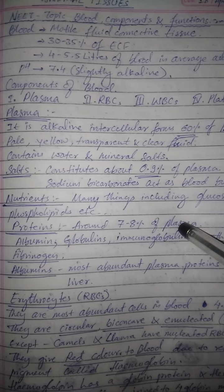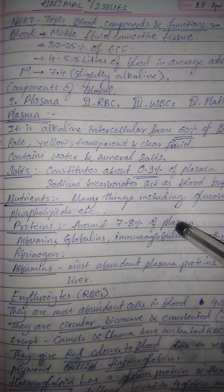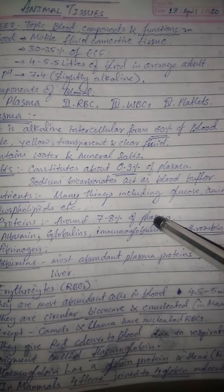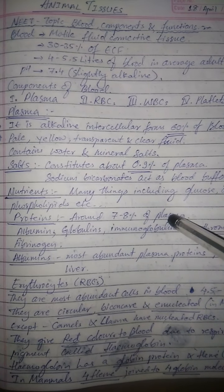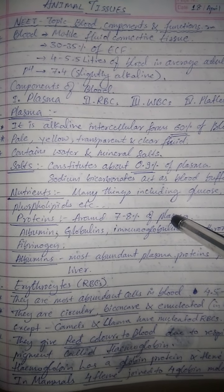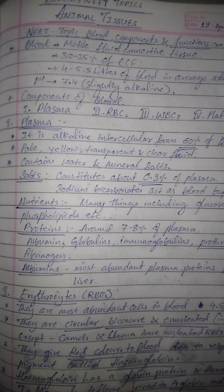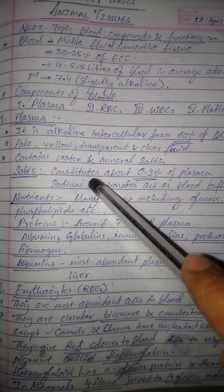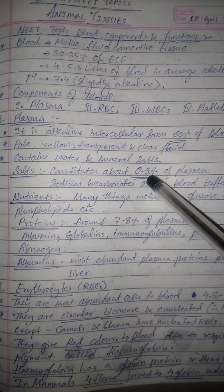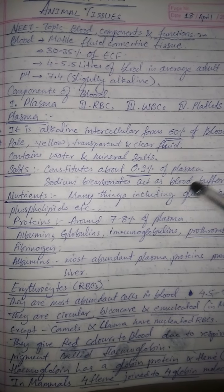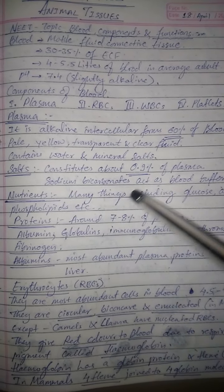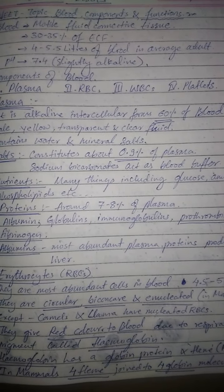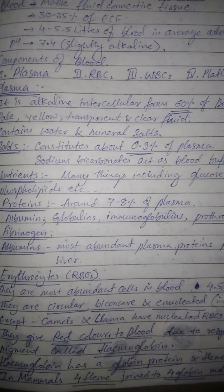Plasma is an alkaline fluid which is intercellular, present between the blood cells, and forms around 60 percent of the blood. It is a pale yellow, transparent, clear straw-colored fluid. It contains water and minerals mainly. The mineral salts constitute about 0.9 percent of the plasma, and mainly sodium bicarbonates are present, which act as blood buffers and maintain the pH of blood.